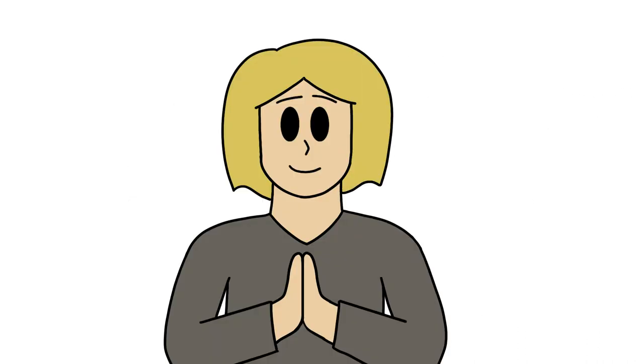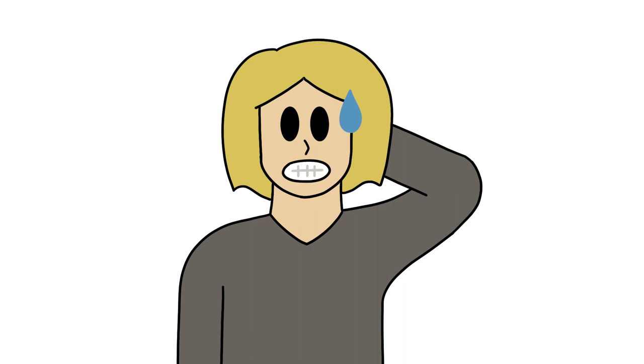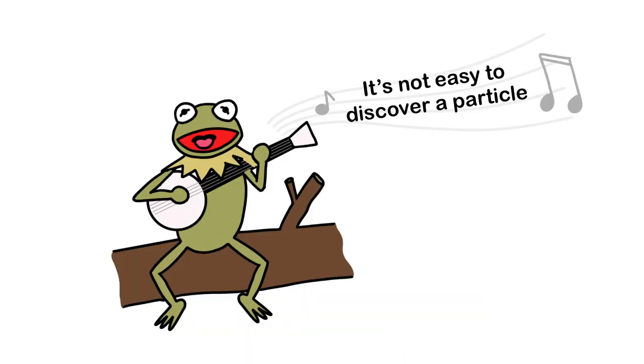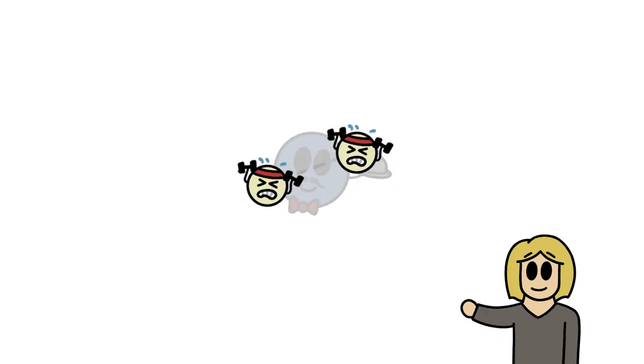To start off, let's start by stating the obvious. It's not easy to discover a particle. There are many reasons for this, but one of the main ones is that most particles are unstable. They change into other ones in a fraction of a second.